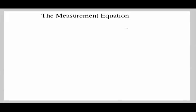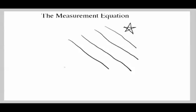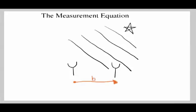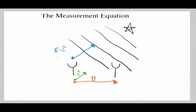We have a source in the sky with plane waves coming down onto two antennas, and the separation between those two antennas is a vector which we often call the baseline B. If we also define the direction towards the source to be S-hat — a unit vector — then the projection of the baseline along the source direction is B dotted with S. If we want to measure that in the amount of time it takes to traverse that distance, we divide by the speed c, and that is the delay tau between these two antennas as perceived by this source.